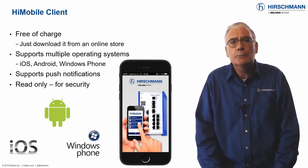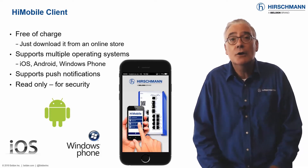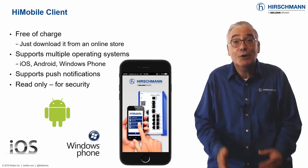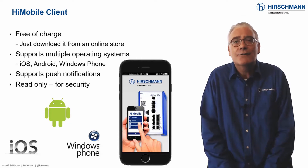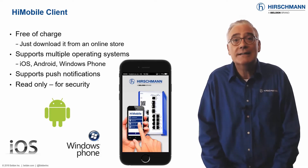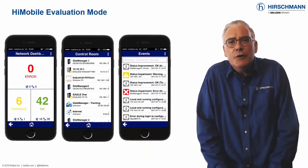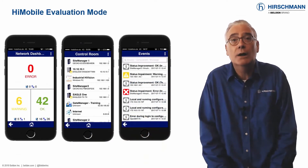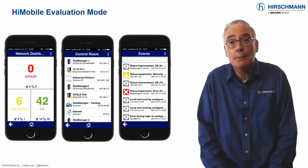HiMobile can provide geographical coordinates of a device to Industrial HiVision for use in applications like Google Maps. You can even use HiMobile to flash the port LEDs at either end of a cable to see exactly where the cable is connected to the switches. If you would like to try HiMobile without a network, the app includes an evaluation mode which allows you to test most functions of the app.